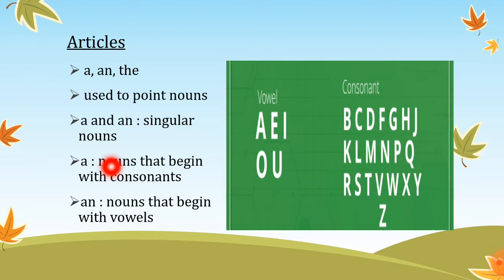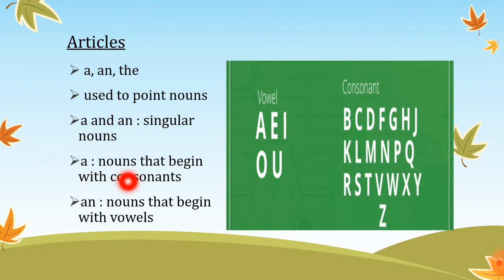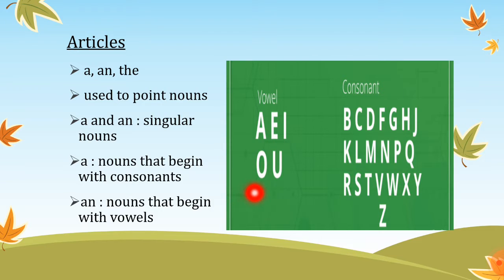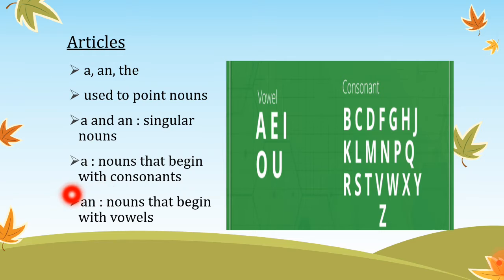'A' is used with nouns that begin with consonants. Then we have 'an' — 'an' is used with nouns that begin with vowels. We have five vowels, which are a, e, i, o, and u. So 'a' is used with nouns that begin with consonants, whereas 'an' is used with nouns that begin with vowels.